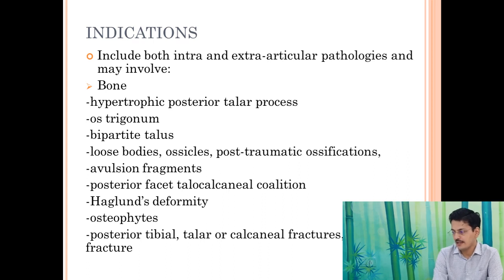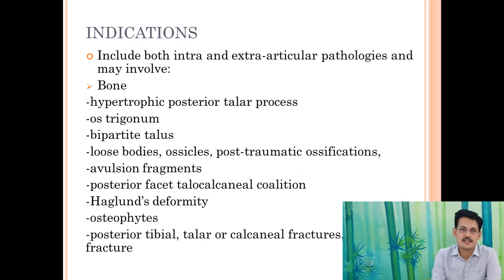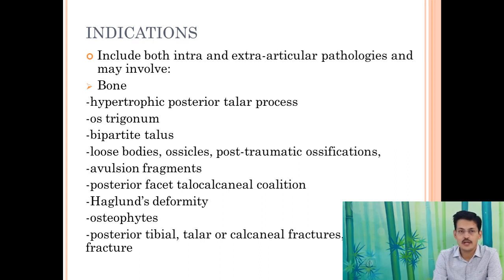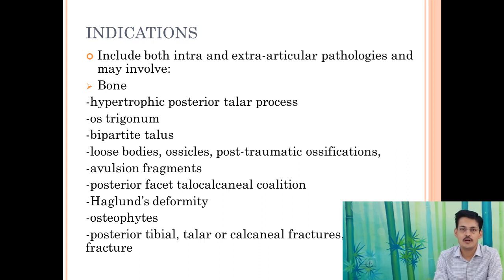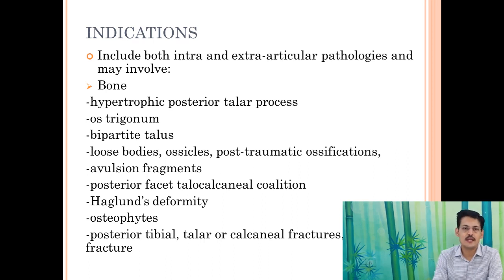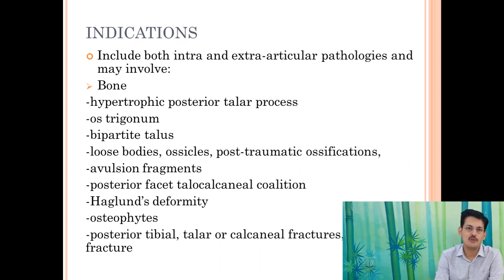You may also have bipartite talus. Loose bodies and ossicles can occur in both the posterior ankle joint and the subtalar joint, and both can be addressed nicely with posterior ankle arthroscopy, including smaller avulsion fragments. Occasionally, you can have a posterior fibrous talocalcaneal coalition, which can be easily addressed — if there is a coalition bar, we can resect it with a burr and remove it via posterior arthroscopy. For Haglund's deformity, endoscopic calcaneoplasty for retrocalcaneal bursitis is a very good indication.